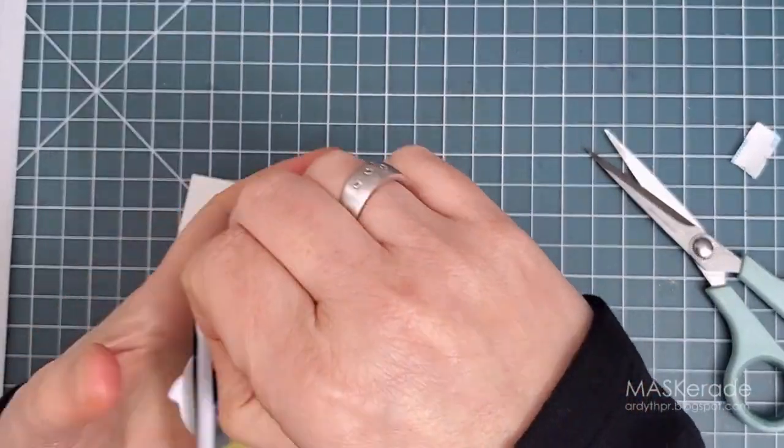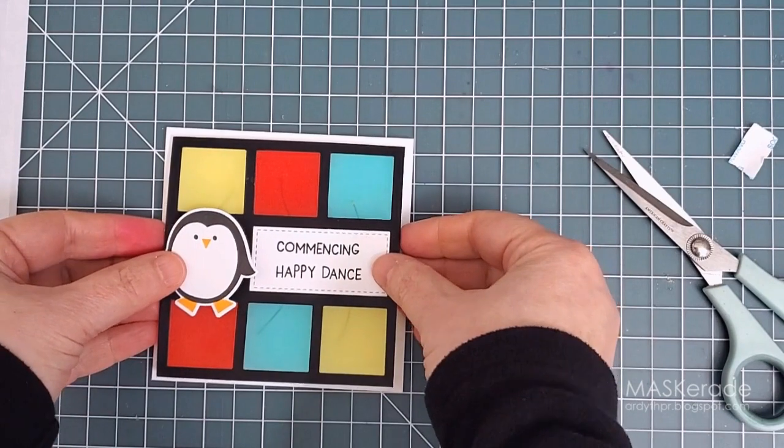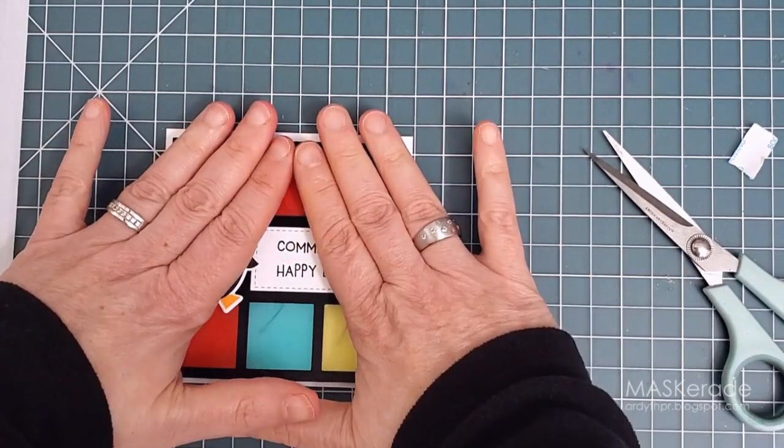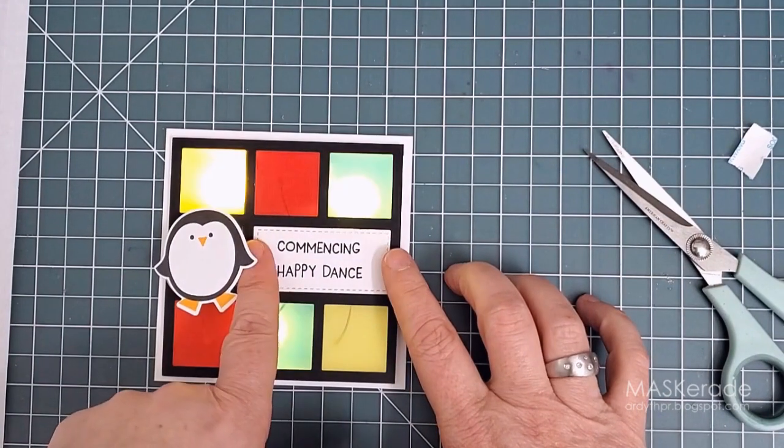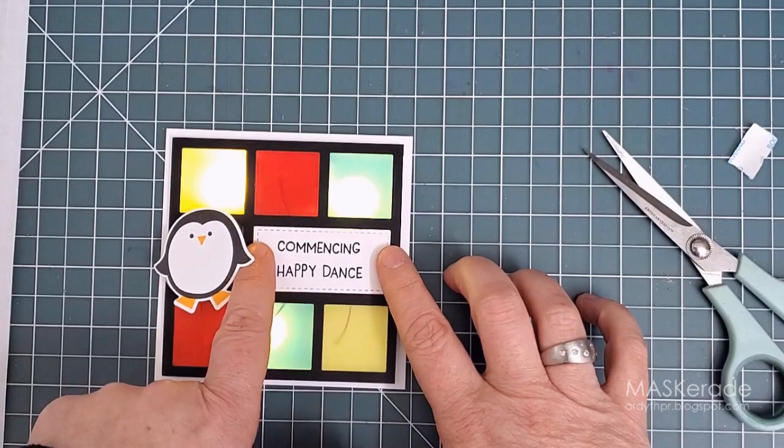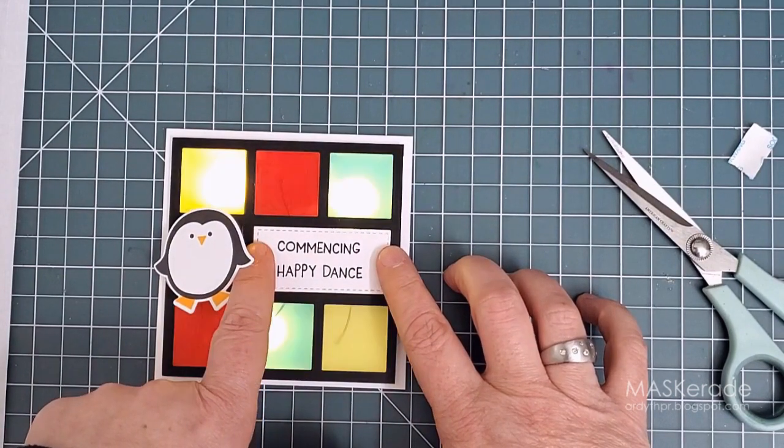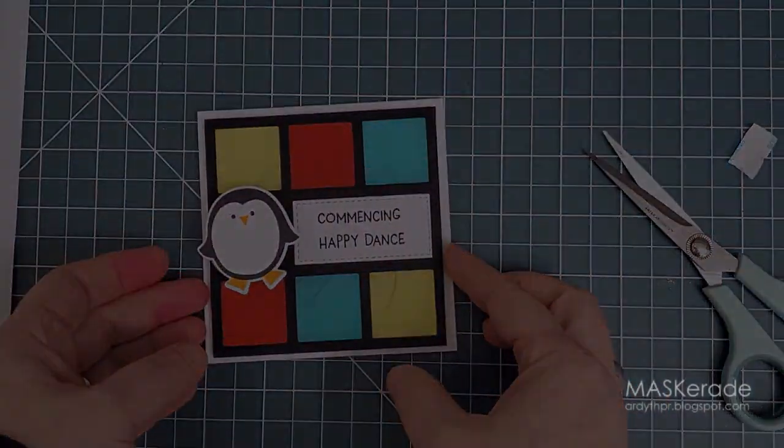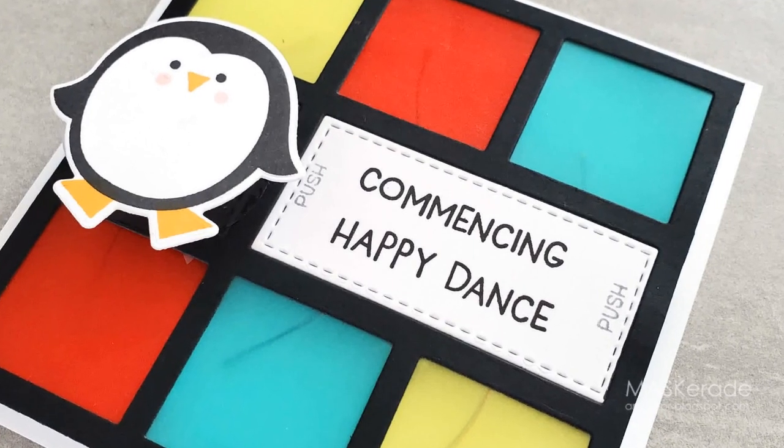So here's how I would make it easier next time. I would cut a square of white vellum just slightly smaller than that big black frame and I would adhere it to the back of the black frame. I would cut the colored vellum with the die and inlay the squares onto the white vellum. This would not only save me a lot of the fiddly taping, but it might make the wires less noticeable through the windows when the card isn't lit up.